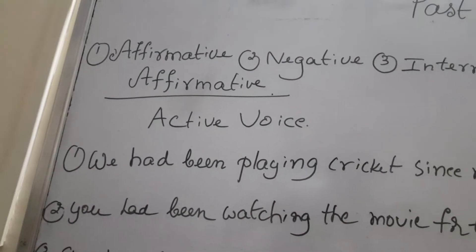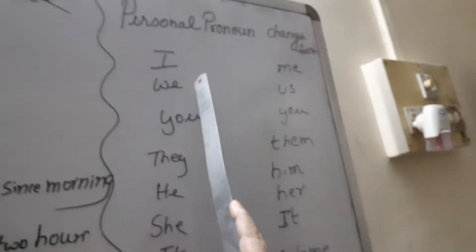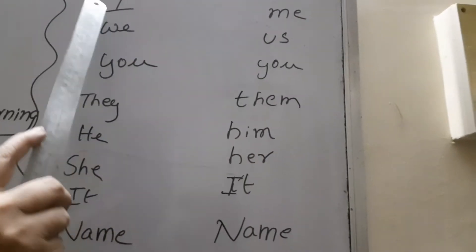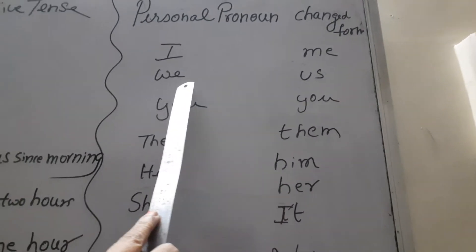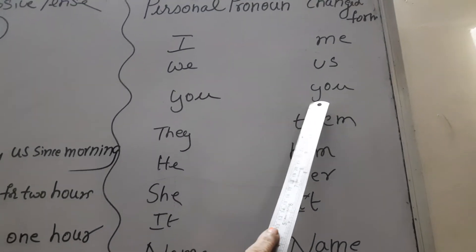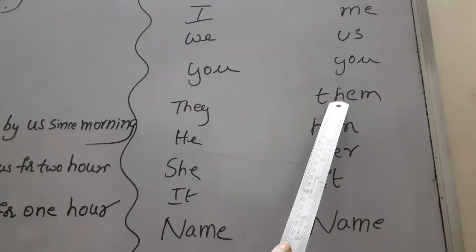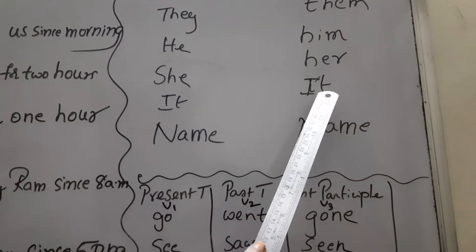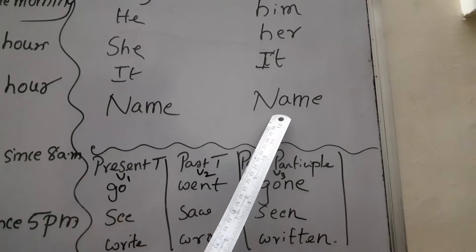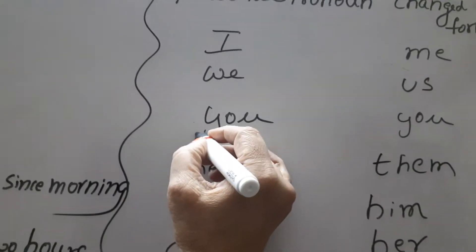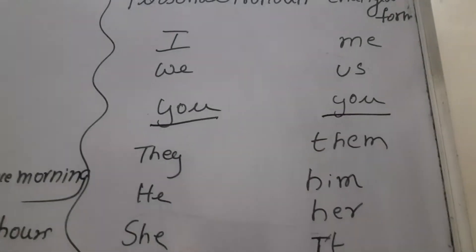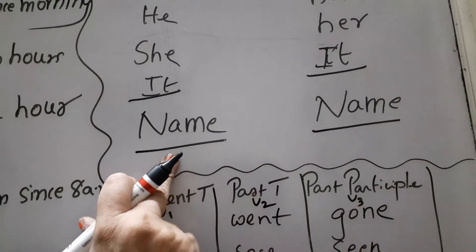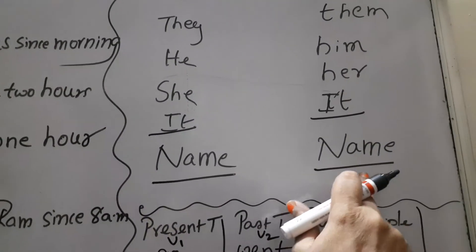Before starting, let us see some rules. These are the personal pronouns and their changed forms: I → Me, We → Us, You → You, They → Them, He → Him, She → Her, It → It, Name → Name. Note that You, It, and Name remain the same. If the name is Sita, it won't change.